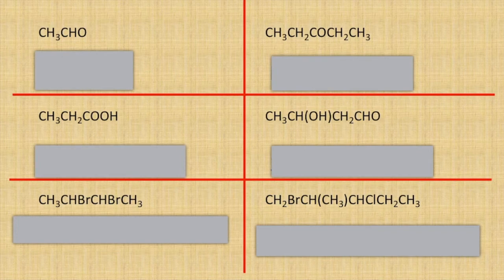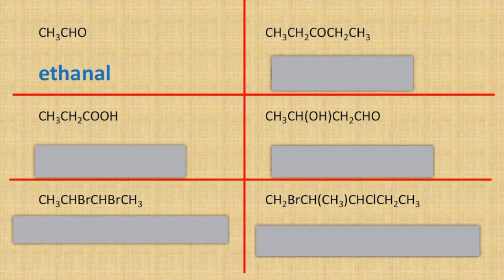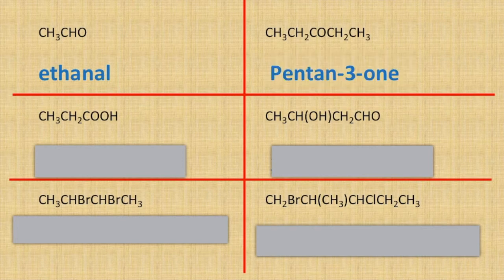It's an aldehyde with two carbons, so that one is going to be ethanal. The next one along is going to be a ketone — five carbons and the ketone group is on the third carbon — so that is going to be pentan-3-one. The next one is going to be propanoic acid.